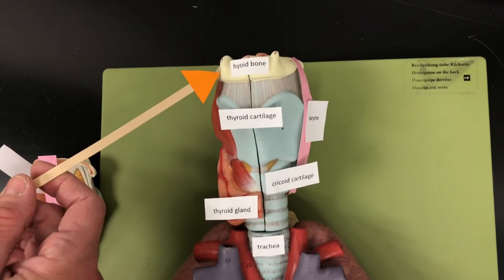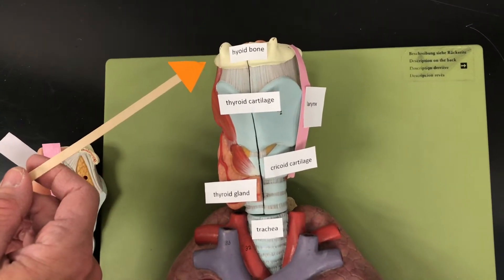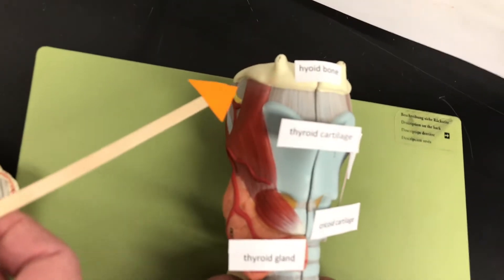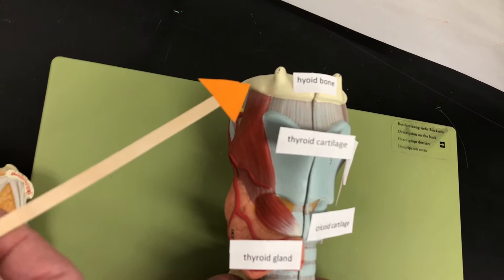This is the hyoid bone, and the hyoid bone has lots of muscles that are anchored to it. Remember the hyoid bone does not articulate with any other bone in the body.